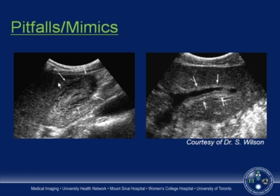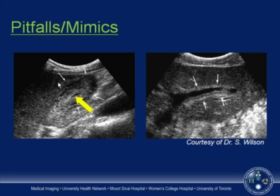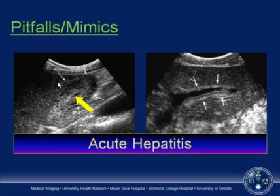Regarding pitfalls and mimics: a young woman with acute right upper quadrant pain showed markedly thickened and edematous gallbladder wall on ultrasound, but the gallbladder was not tensely distended and no gallstones were visible. Periportal edema was also noted. Checking the patient's chart revealed markedly elevated transaminases — this patient had acute hepatitis. The teaching point: always know your patient, speak to them, and review their charts to interpret studies with the full complement of available clinical information.